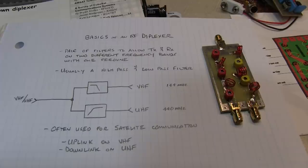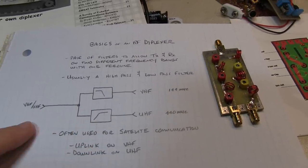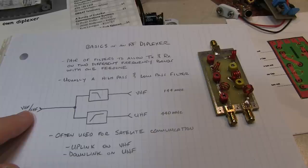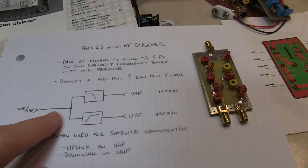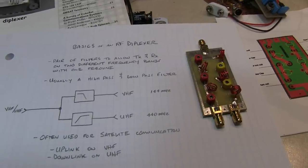Usually it's composed of a high-pass and a low-pass filter in this configuration here, where a single feed line could bring in VHF and UHF signals in one direction or the other, and then the filters would separate them out, maybe to go to two different antennas.